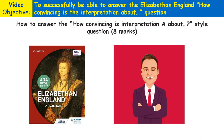Hello and welcome to Miss Manley History Teacher's latest video on how to answer the 'how convincing is interpretation A' question, which is worth eight marks and is part of the Elizabethan England from 1568 until 1603 AQA GCSE paper. Let's get started with my top tips on how to answer this type of question.